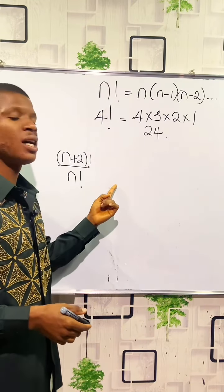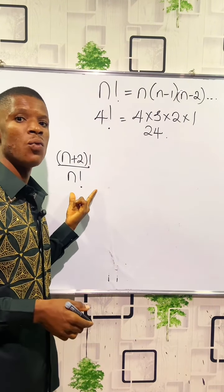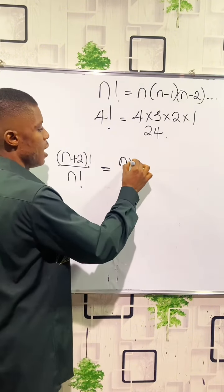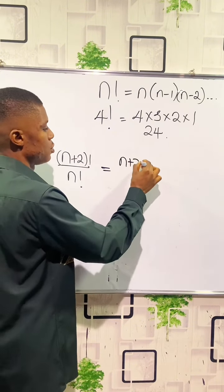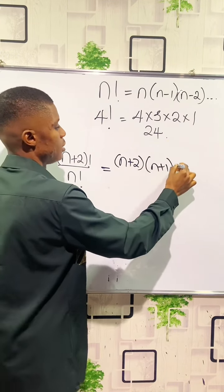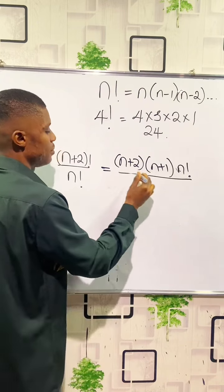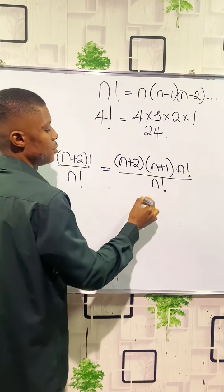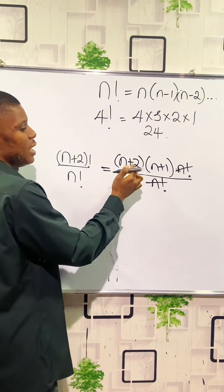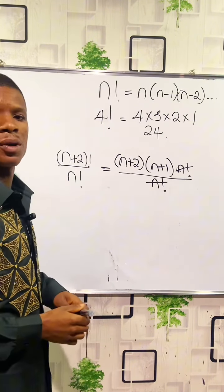It's the same thing: (n+2)! divided by n! becomes (n+2) times (n+1) times n! divided by n!. So that n! cancels with n!, and we are left with (n+2) times (n+1).